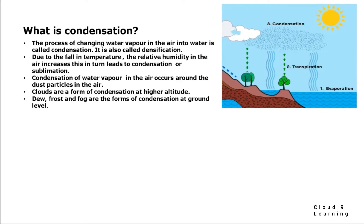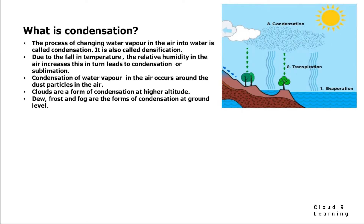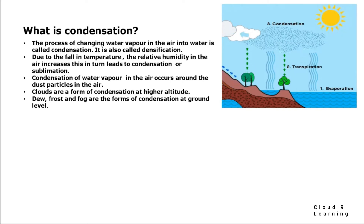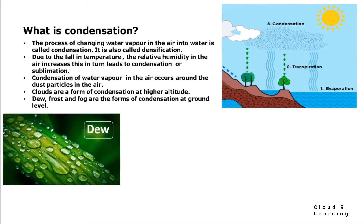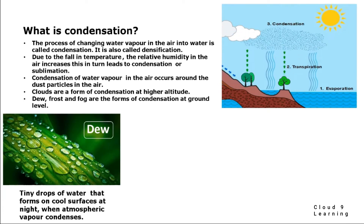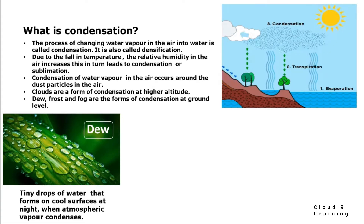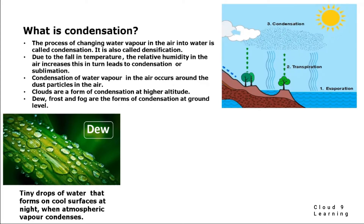Clouds are a form of condensation at higher altitude, whereas dew, frost and fog are forms of condensation at ground level, formed near the surface of the earth. Dew are tiny drops of water that form on cool surfaces at night when atmospheric vapor condenses. As you can see here, small drops of water on the leaves — these are dew drops.